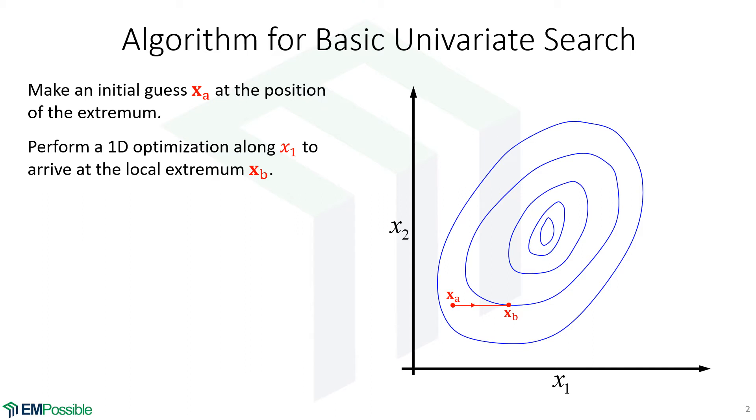Then we move to the next independent variable, which is X2. And we perform a one-dimensional optimization along X2 and arrive at the next local extremum, XC in this case. Well, we've been through all independent variables, so we start over again.